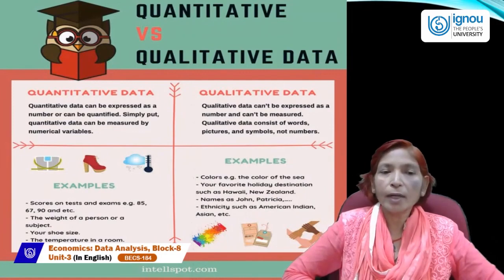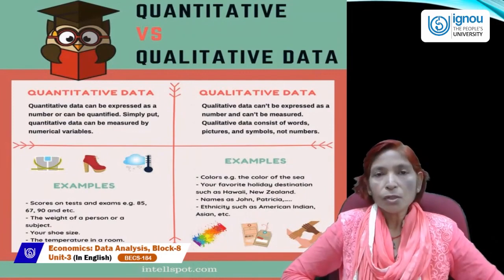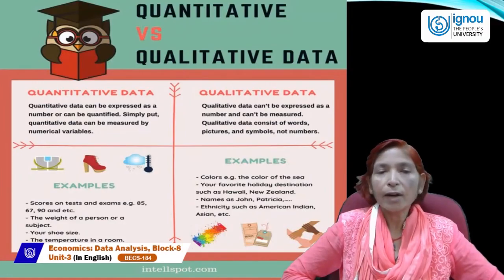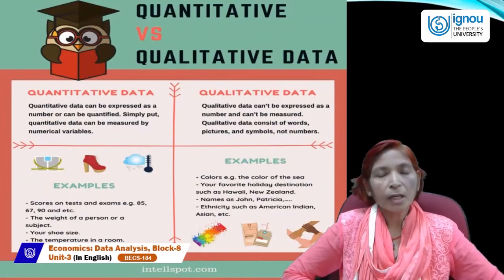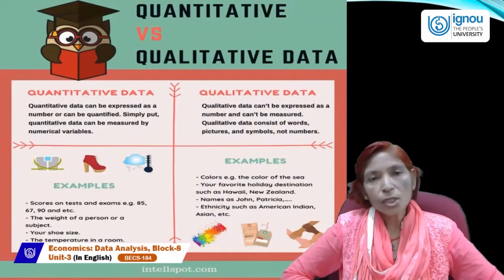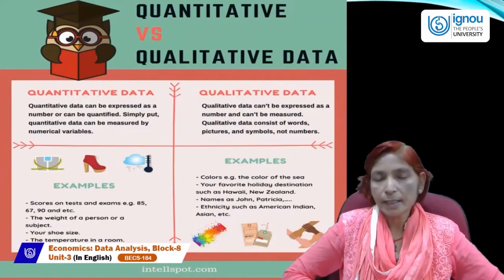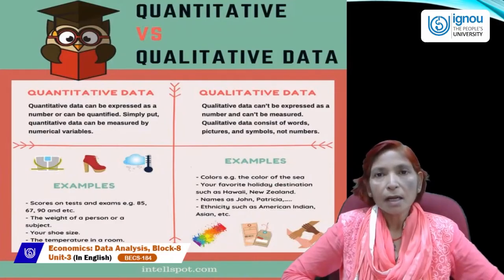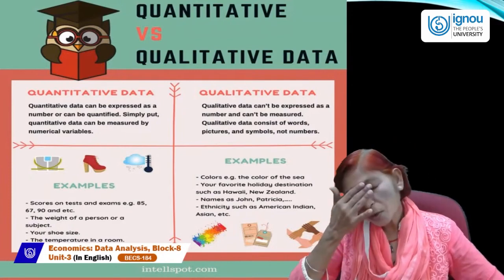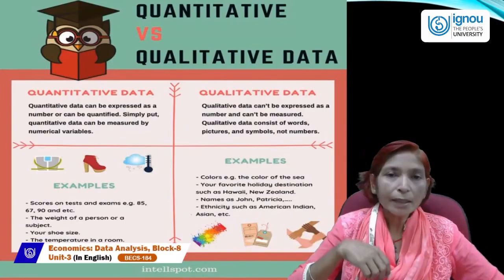Examples of quantitative data include scores on tests and exams — for example, a student scores 85, 67, or 90 marks in math, science, social studies, or economics. These can be quantified and expressed in numerical terms, so they are called quantitative data.